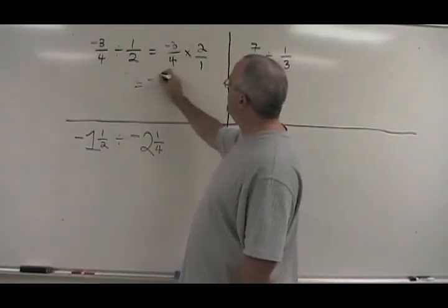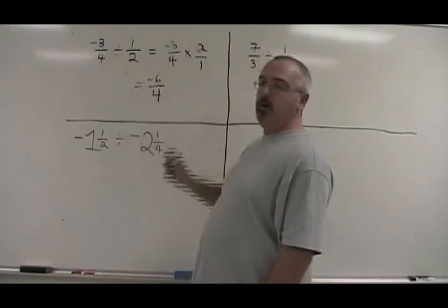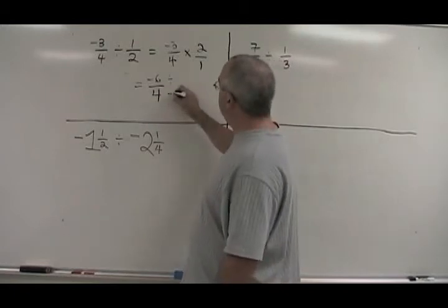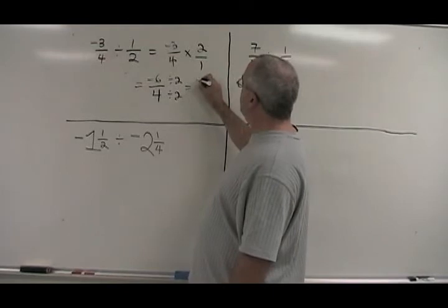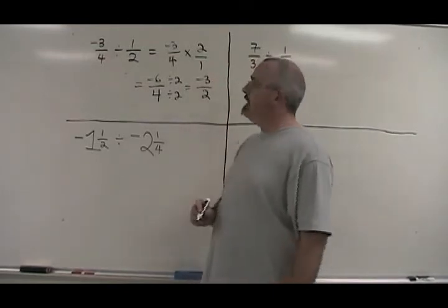Negative 3 times 2 is negative 6. 4 times 1 is 4. 6 and 4 have a common factor of 2, so let's divide both of them by 2. Negative 6 divided by 2 is negative 3. 4 divided by 2 is 2. Our answer is negative 3 halves.